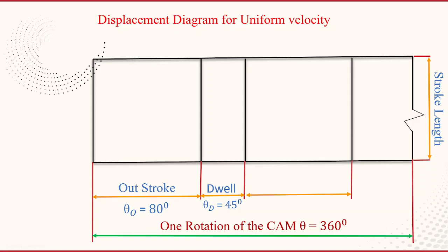Then next return stroke. The return stroke is given again 80 degrees. It may not be equal to the outstroke and return stroke, it may be different. And the remaining angle 155 is the dwell period.